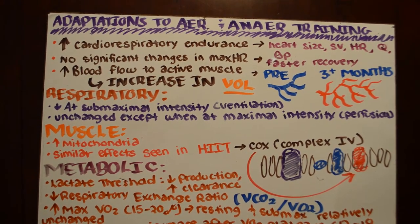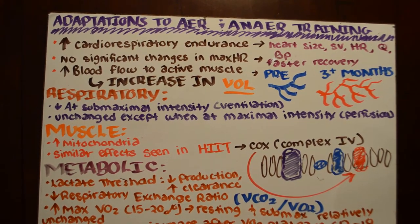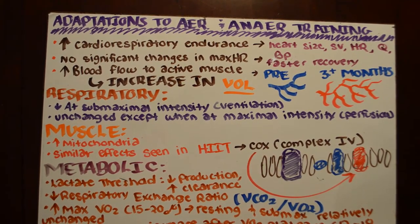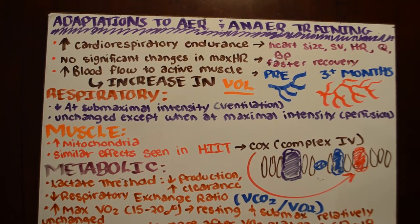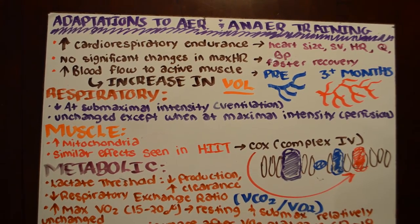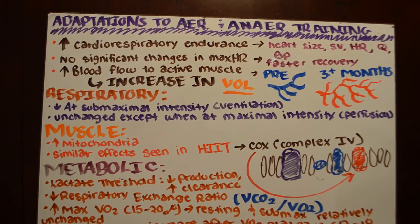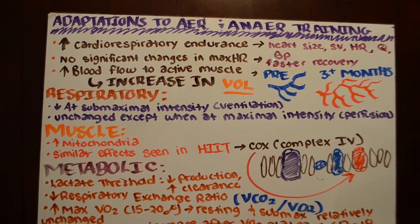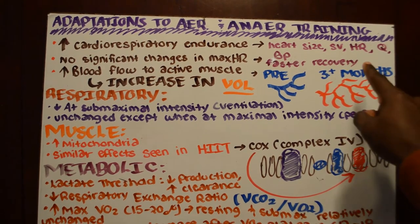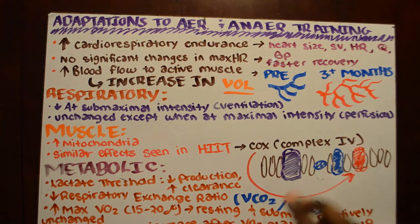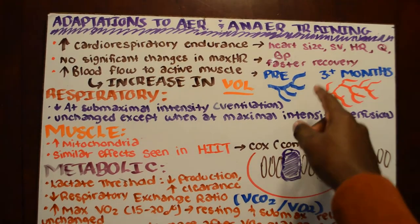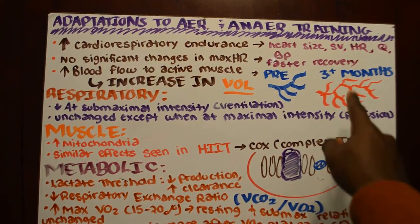When we experience increases in cardiorespiratory endurance, we might have an increase in heart size. This can be due to an increase in the left ventricle — which, as we covered, is responsible for pumping blood to the periphery of the body: hands, feet, all that. As a result, when endurance goes up, that left ventricle will get stronger, and we'll see an increase in heart size as well as an increase in stroke volume.